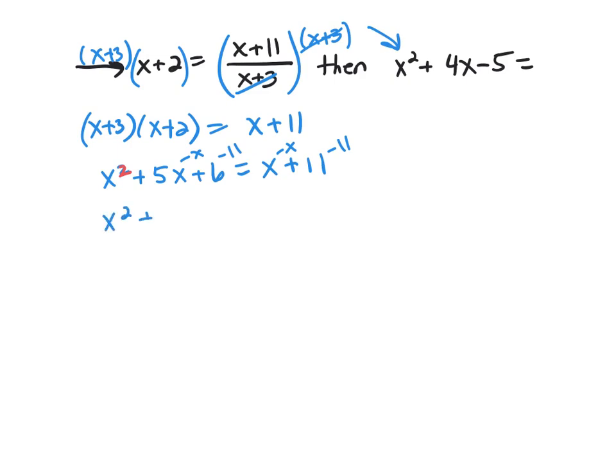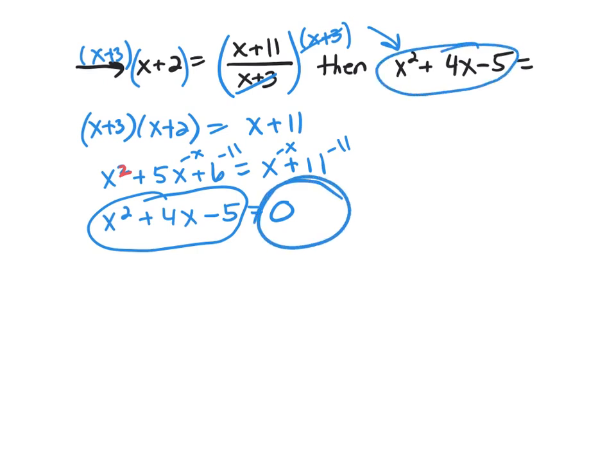That leaves me x squared plus 4x minus 5 equals 0. Well, look at there. x squared plus 4x minus 5 equals 0.